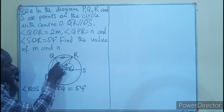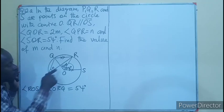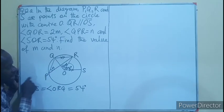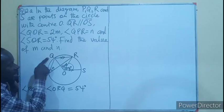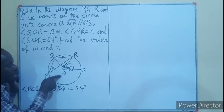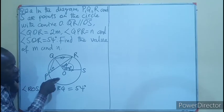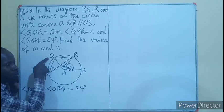What property applies here? If O is the center, then QO is a radius because a line from the center to the circumference is a radius.